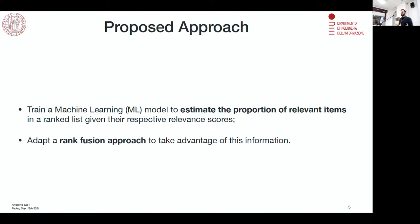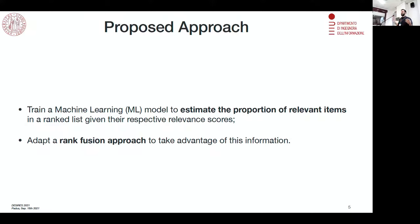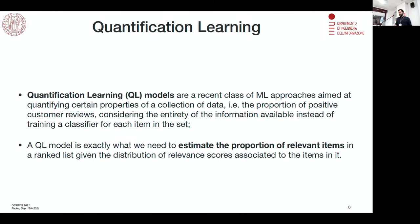We wrote the paper, so the answer is yes to both questions. We propose a two-stage approach. First, we train a machine learning model to estimate this quantity, using only the relevance scores returned by each retrieval model associated to each document in the ranked list we aim to merge. Once we train this model, we adopt a simple rank fusion approach to combine these models, making good use of this additional information.